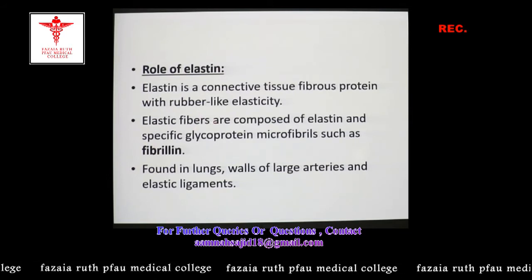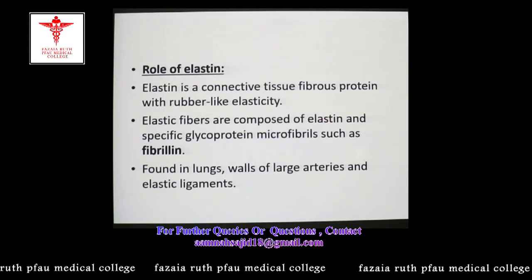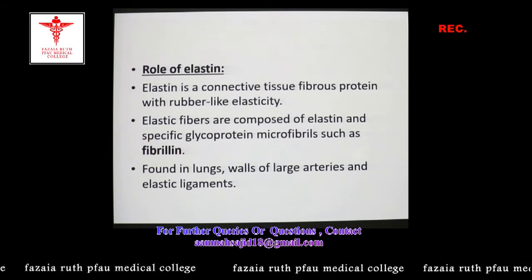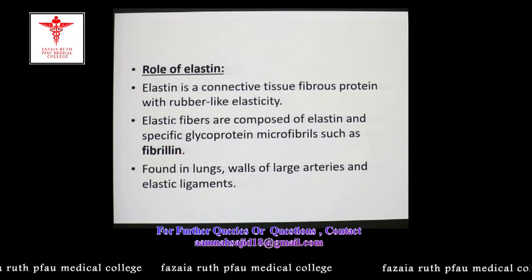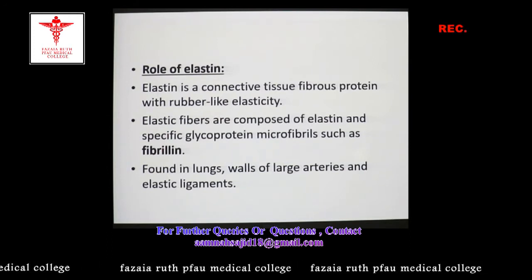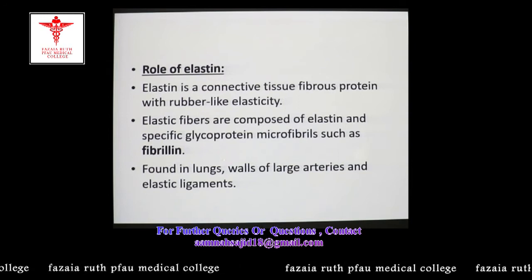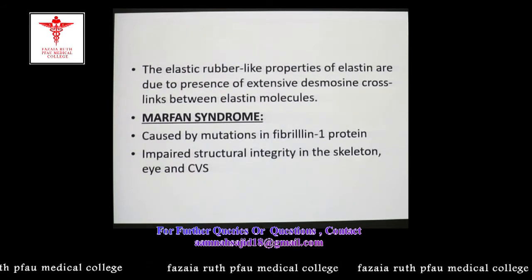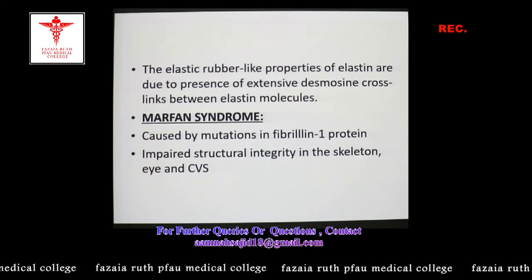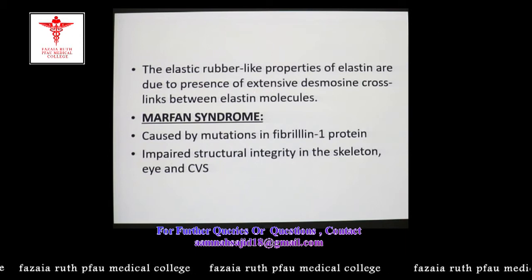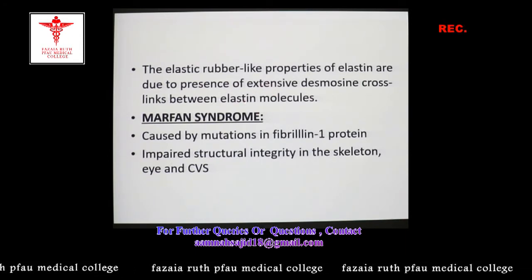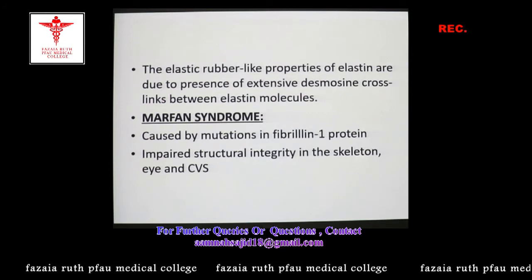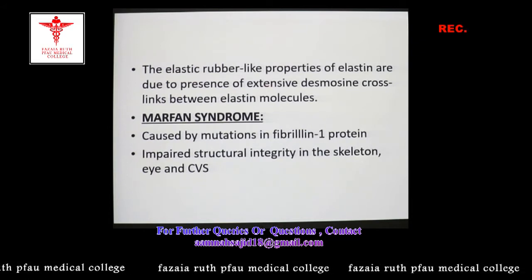Fibrillin is a glycoprotein on which elastin molecules are deposited, resulting in the formation of elastic fibers found in lungs, walls of large arteries, and elastic ligaments. The elastic rubber-like properties of elastin are due to extensive interconnections between the elastin molecules deposited on fibrillin. These interconnections are known as desmosine cross-links.